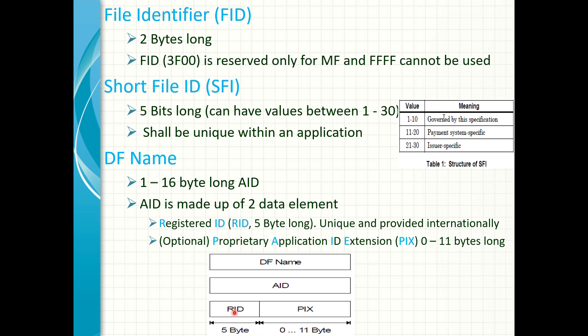It is always mandatory for each application. This is always provided by a national or international registry so they are always unique. The other field is a proprietary application ID extension. It has a length between 0 and 11 bytes and is optional for each application. This can be a serial or version number used to manage a particular application.